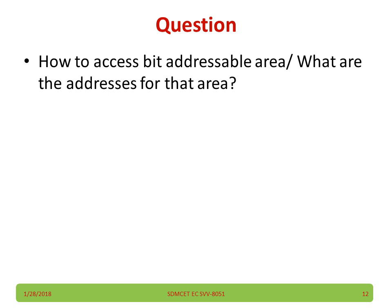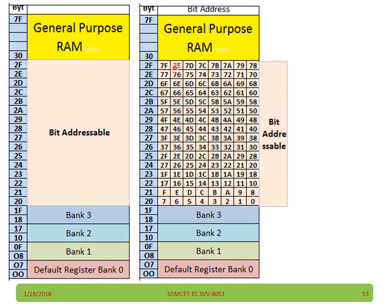How to access the bit-addressable area? What are the addresses for that area? These are all bit addresses. Individually you can access them — the addresses are 0, 1, 2, 3, 4, and so on. You may notice that address 7 appears in both the byte and bit address spaces. Which 7 will be accessed depends on whether the instruction is working on a bit or a byte: if it is a byte instruction it will select the byte address; otherwise if it is a bit instruction it will select the bit address.